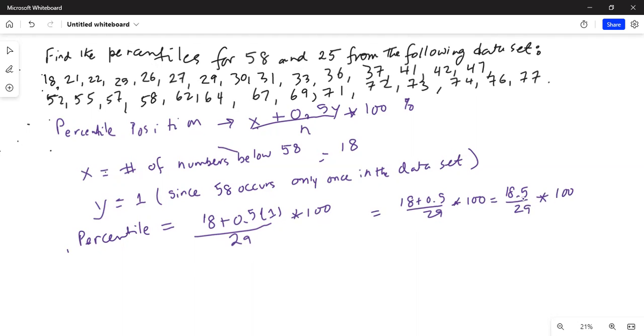Let's do the counting - it's 18.5 divided by 29 and then multiplied by 100. So this is 63.7 percentile.